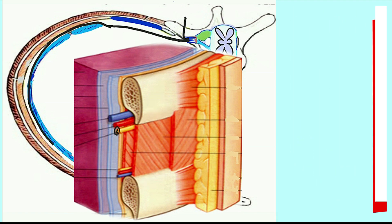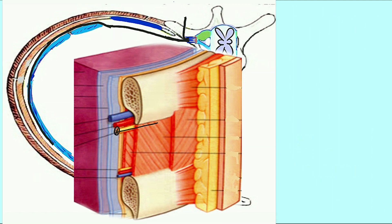In the upper part of the space we have the intercostal nerve, and in the lower part we have the collateral branch of the intercostal nerve, which is the muscular branch. We have already discussed that the intercostal nerve gives a collateral branch that runs alongside it but in the lower part of the intercostal space.